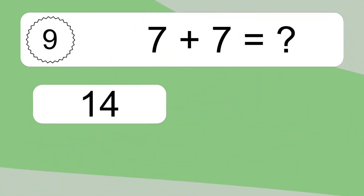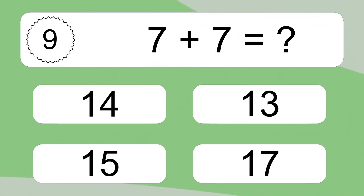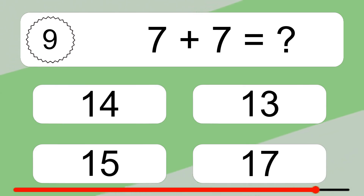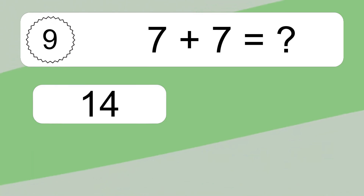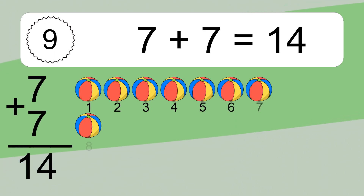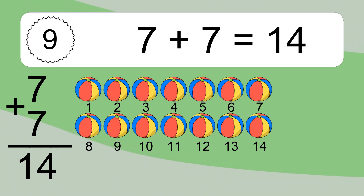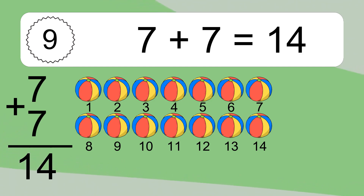7 plus 7 equals what? 7 plus 7 equals 14. Let's count it: 1, 2, 3, 4, 5, 6, 7, 8, 9, 10, 11, 12, 13, 14.